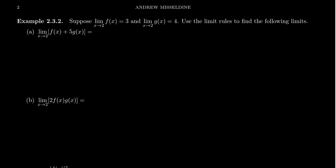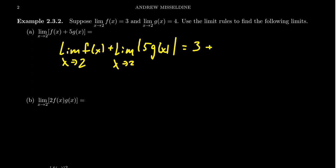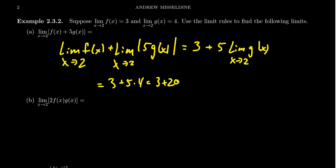When you see the limit as x approaches 2 of f(x) + 5g(x), this breaks up into the limit of f(x) plus the limit of 5 times g(x) as x approaches 2, by law B. The limit of f we know equals 3. Then since you have this constant multiple of 5, law A says bring out the 5 and take the limit of g(x) as x approaches 2, which by assumption equals 4. So we get 3 + 5 times 4, which is 3 + 20, and the limit is 23.